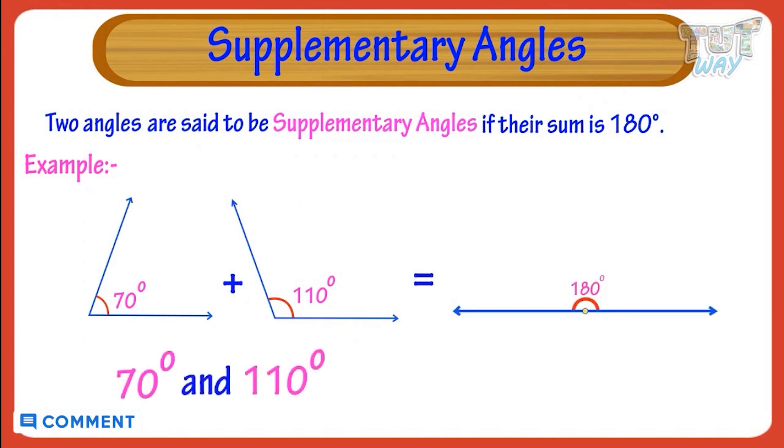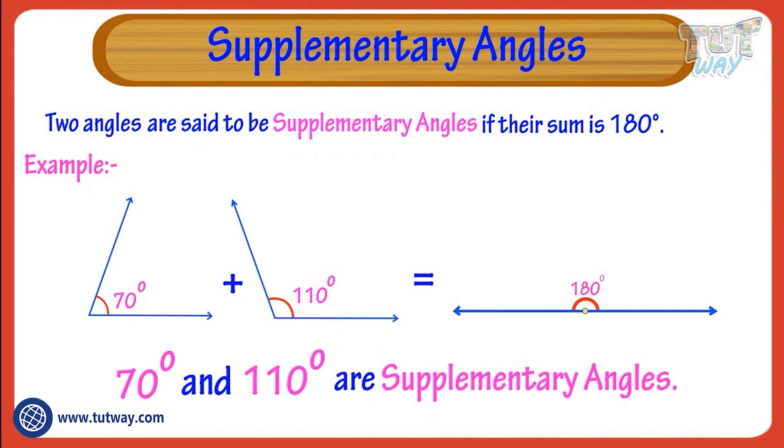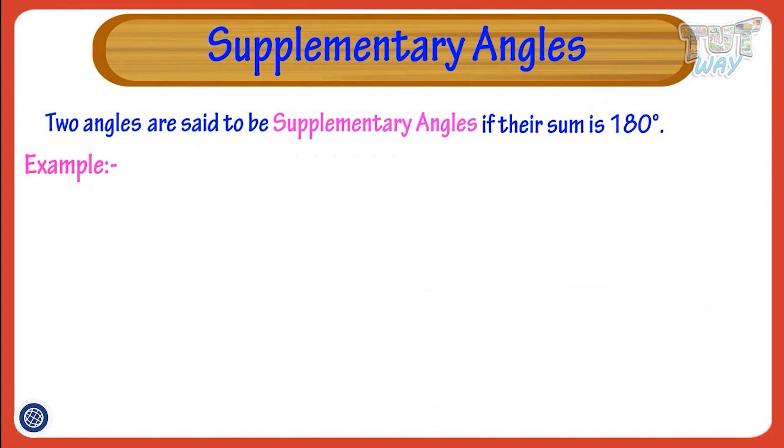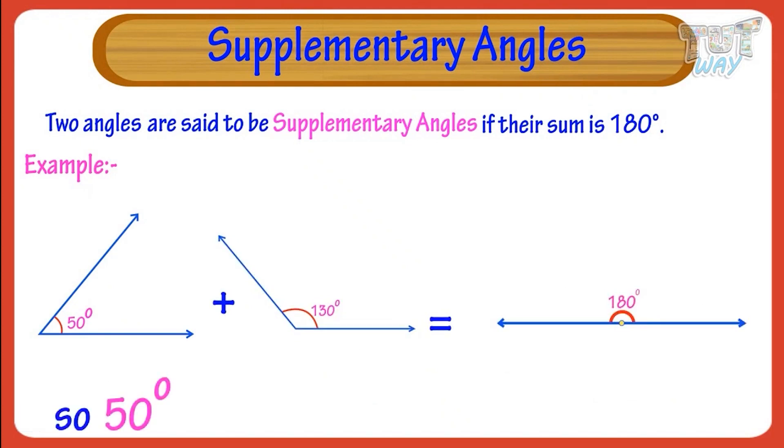Let's take another example. 50 plus 130 equals 180. So, they are supplementary angles.